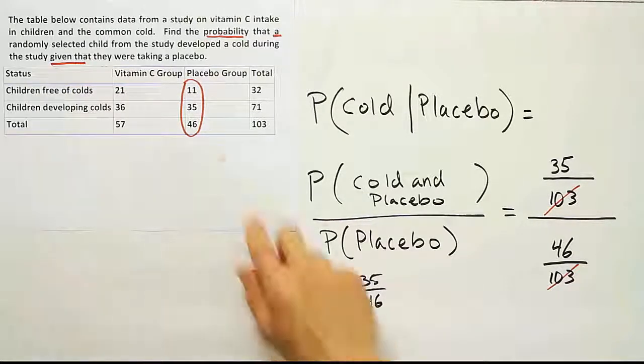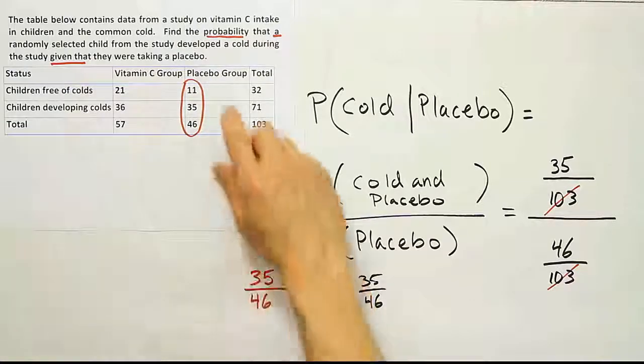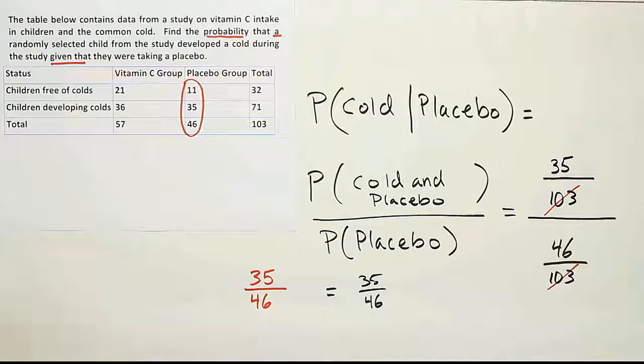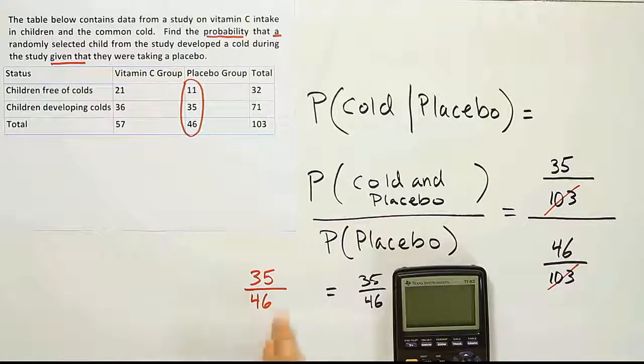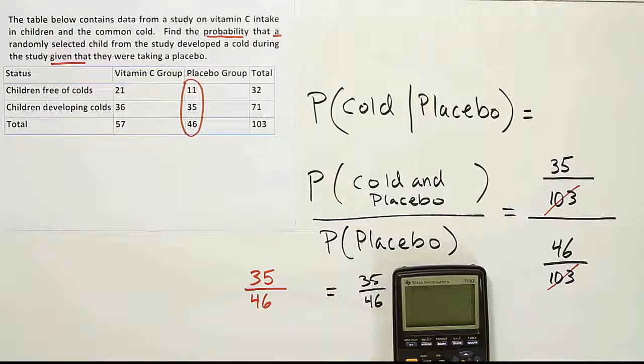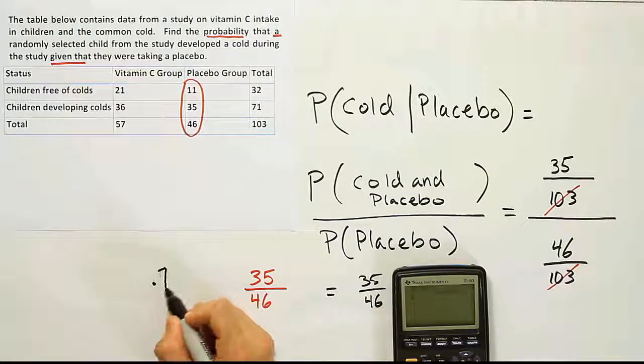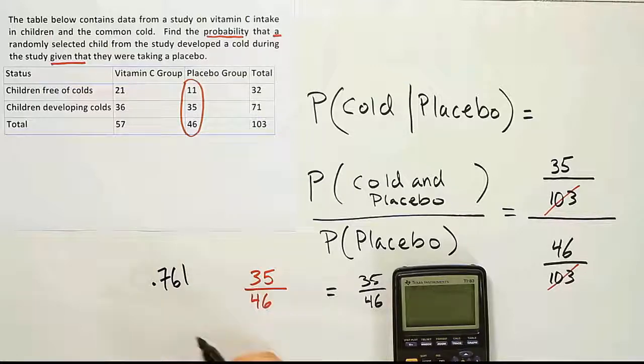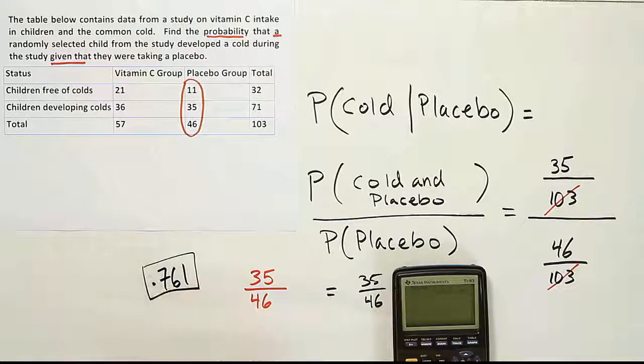All right. Finally, to finish the problem, we're just going to do the division here. So we'll say 35 divided by 46, and when we work that out, we end up with 0.761 or 76.1%.